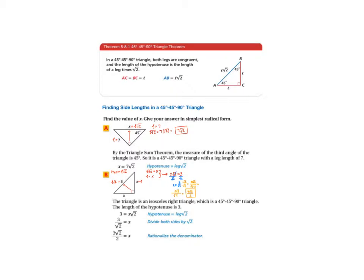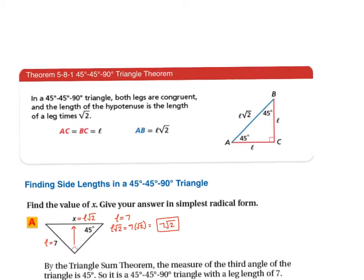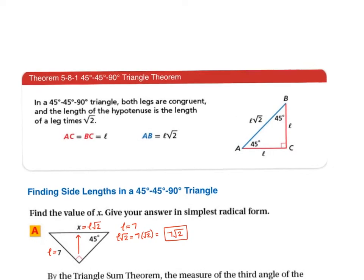This video is going to cover special right triangles, which is section 5-7. We're going to talk about two really special right triangles, and the first one is the 45-45-90 triangle.